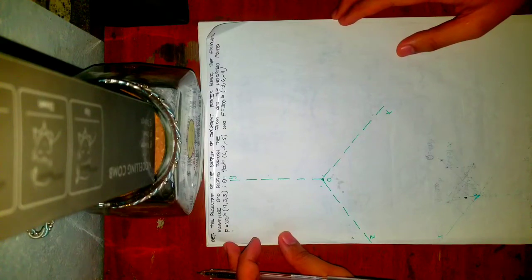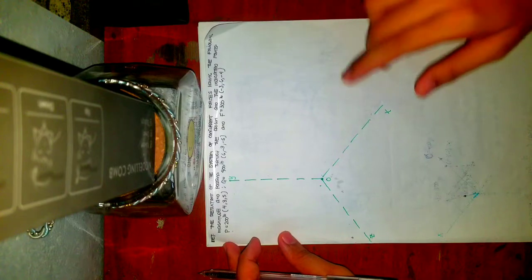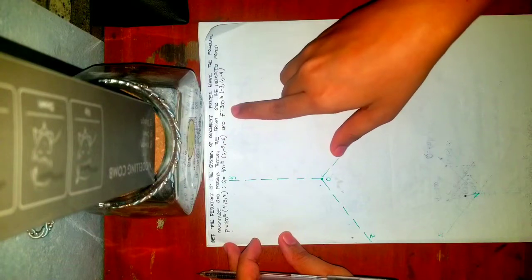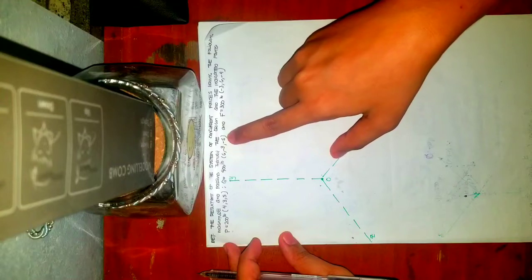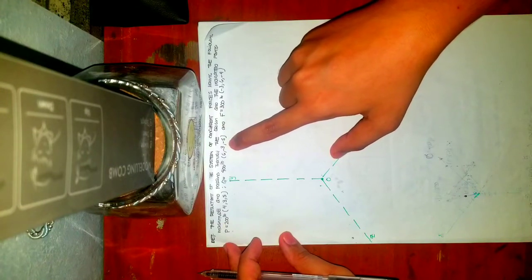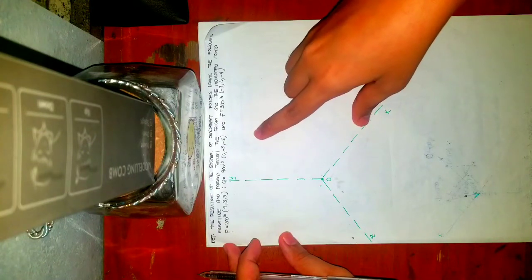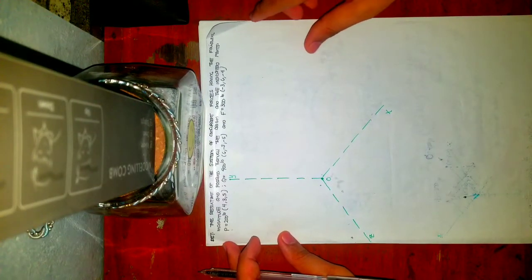Okay guys, good day. So I'll just make a correction on the video tutorial for the topic on resultant. We had an error in the plotting of force Q and force F — I misplaced the Y and Z coordinates. I swapped the two, but the solution is correct since we used the tabulation method and didn't touch the figure. Anyway, I'm here to correct our mistake.